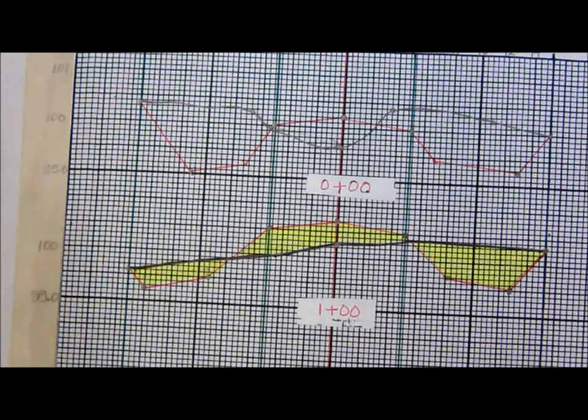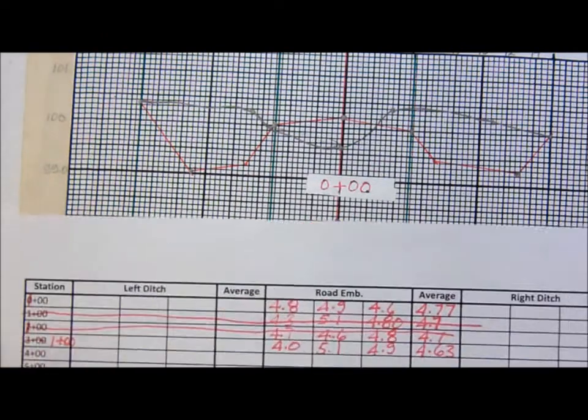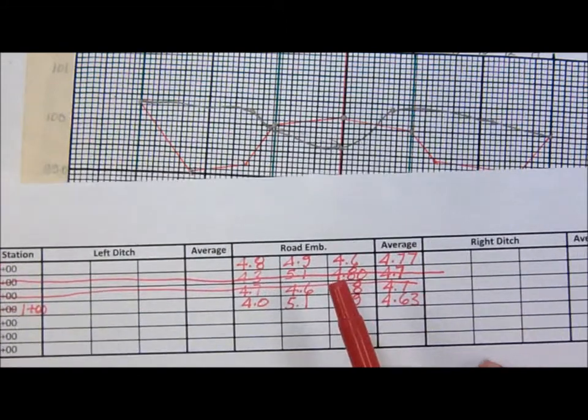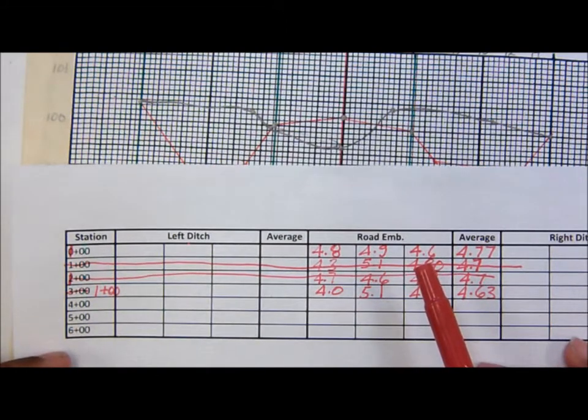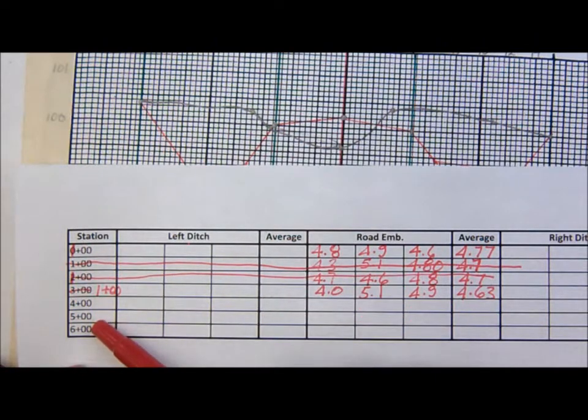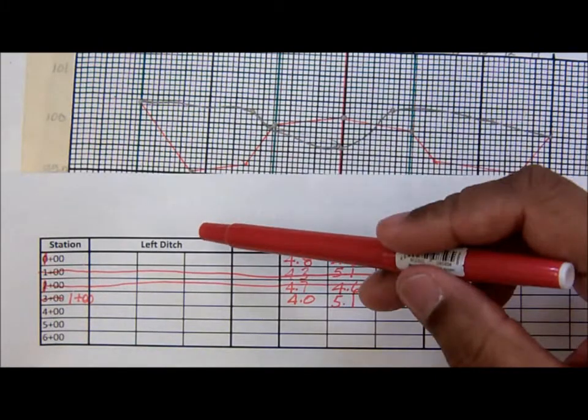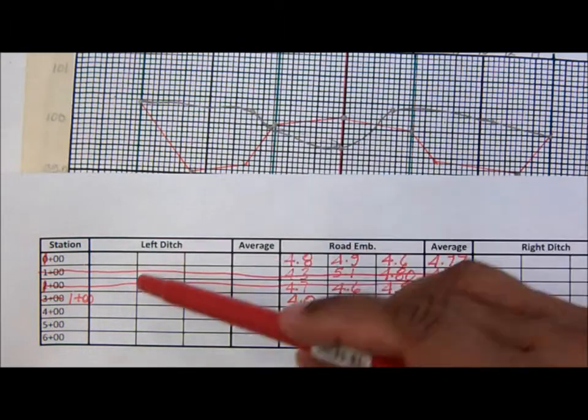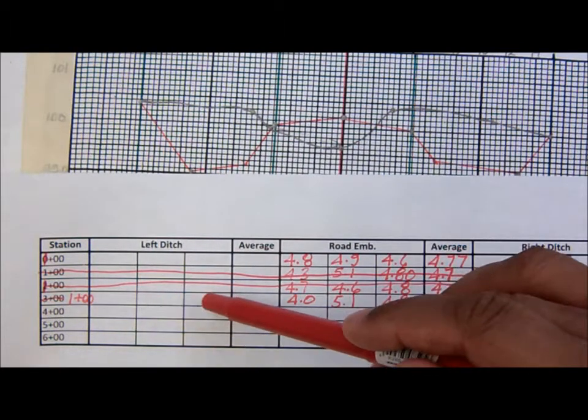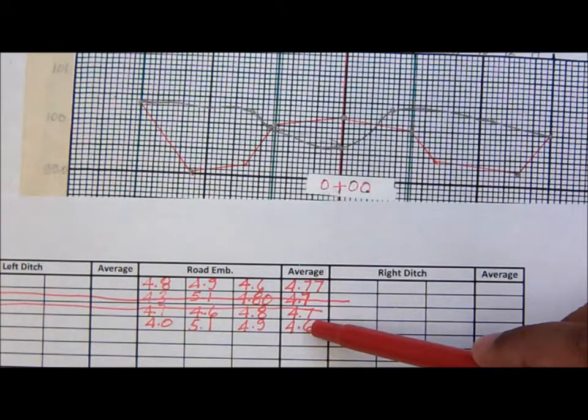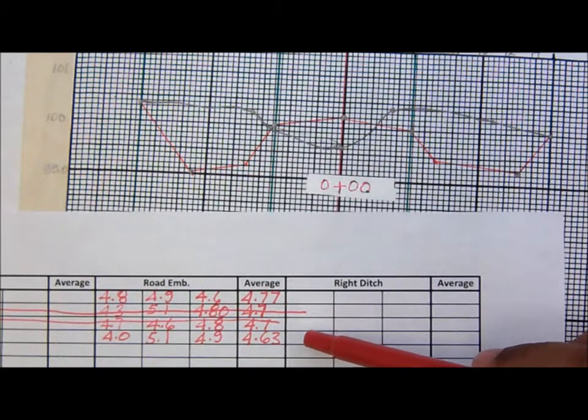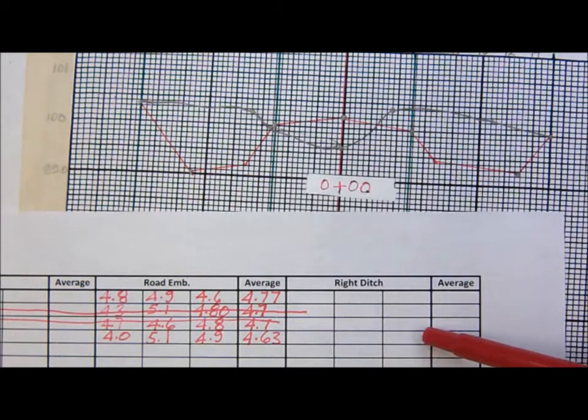I have prepared a data sheet and I will try to get this on Learn also so that you could print it off. As you can see you have stations down here, and for each one the left ditch has three readings one, two, three and an average. For the embankment you have one, two, three and an average, and for the right ditch one, two, three and an average.